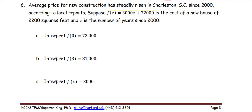In this example, the average price for new construction has steadily risen in Charleston, South Carolina since 2000. Suppose f(x) = 3000x + 72,000 is the cost of a new house of 2200 square feet, and x is the number of years since 2000.